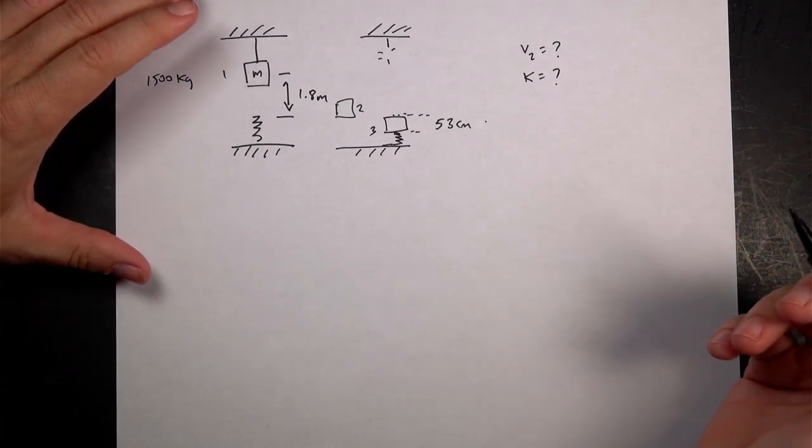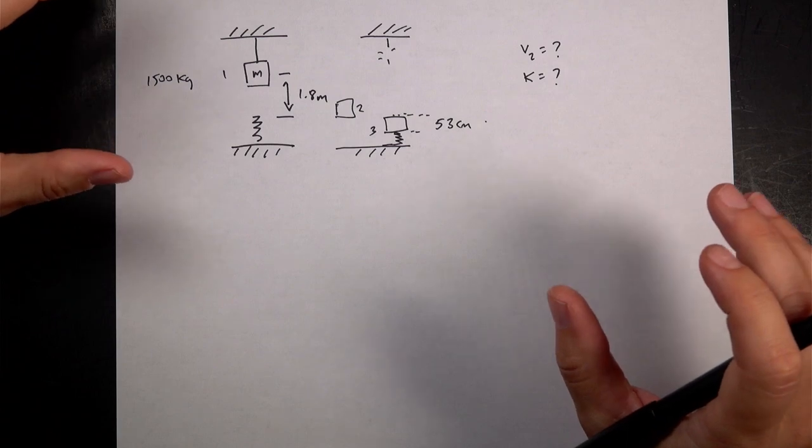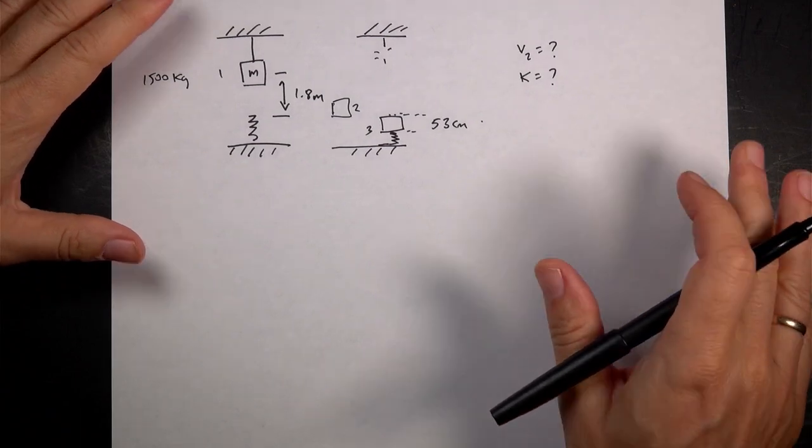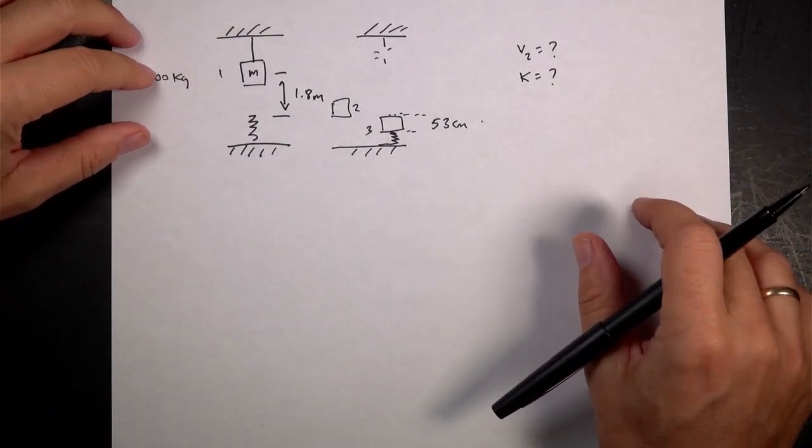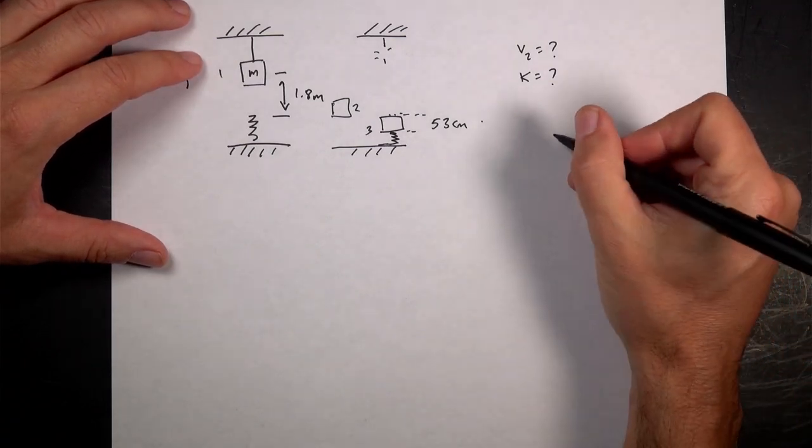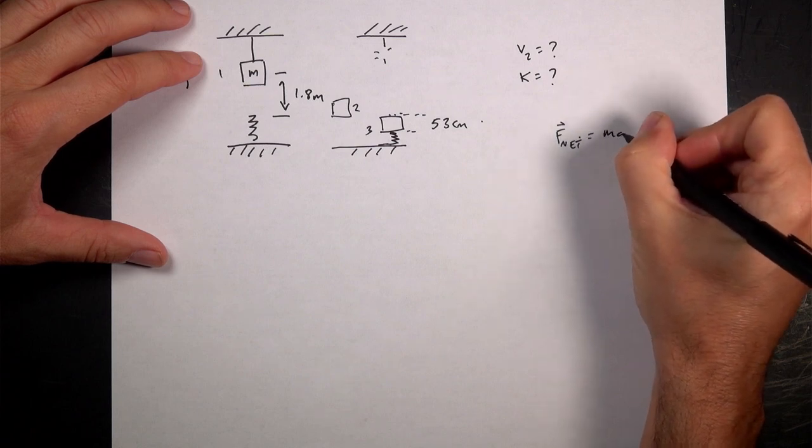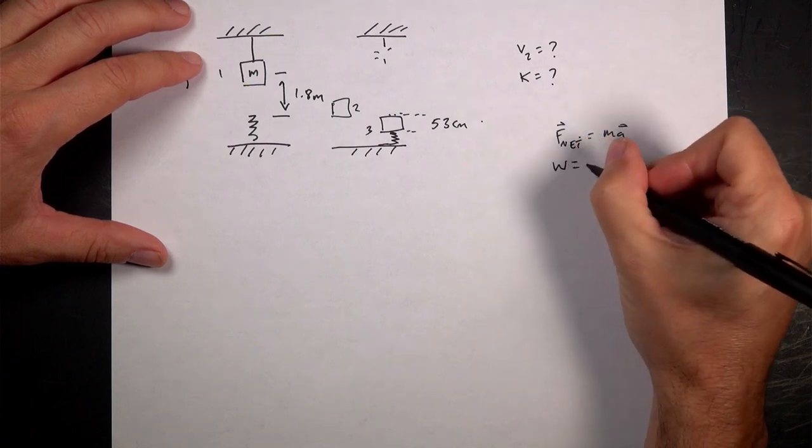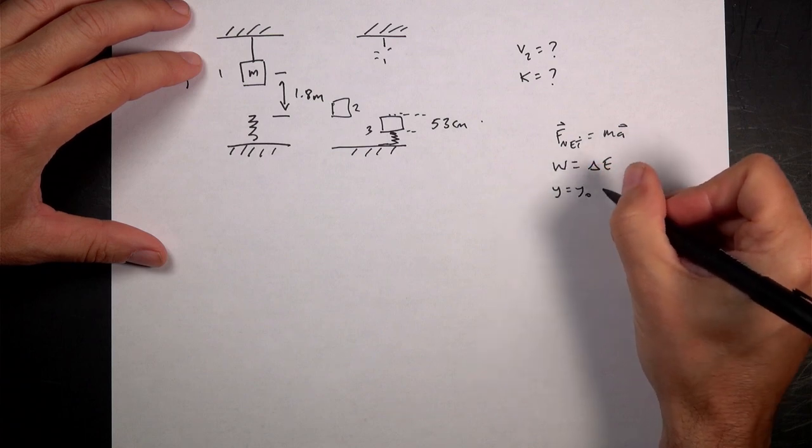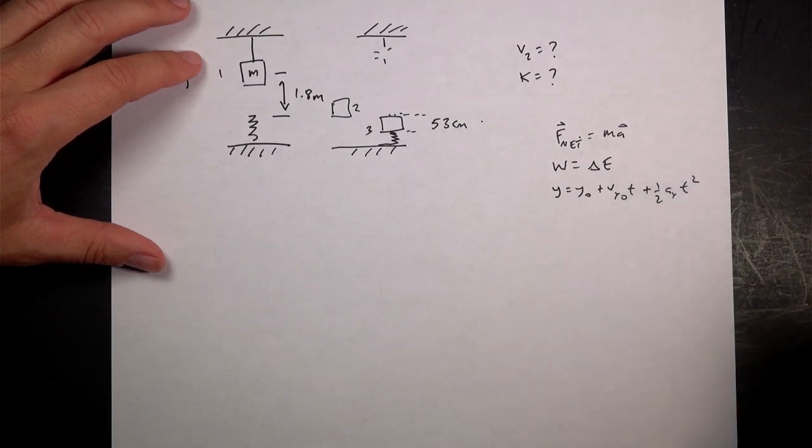This is a physics problem, obviously. We've got to think about what do we do to approach this problem? You probably have a couple of big ideas. You have Newton's second law, which looks like F net equals MA. You have the work energy principle. Work is a change in energy. You have kinematic stuff. It's probably one of those.